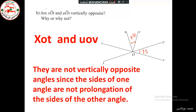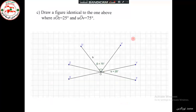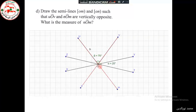Part C: We use the protractor. In this case, angle X, O, T is 25 degrees and angle U, O, V is 75 degrees. We need to draw semilines O, m and O, n such that U, O, V and N, O, M are vertically opposite angles.